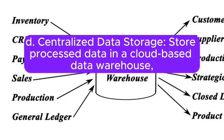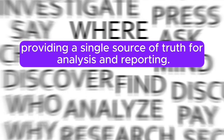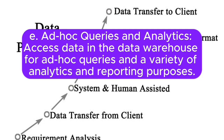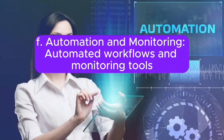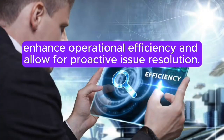D. Centralized data storage: store processed data in a cloud-based data warehouse, providing a single source of truth for analysis and reporting. E. Ad-hoc queries and analytics: access data in the data warehouse for ad-hoc queries and a variety of analytics and reporting purposes. F. Automation and monitoring: automated workflows and monitoring tools enhance operational efficiency and allow for proactive issue resolution.